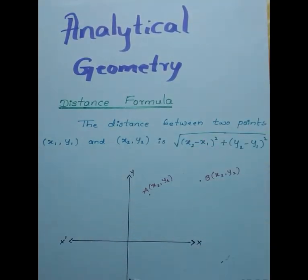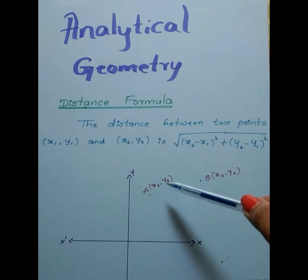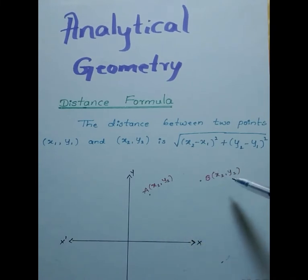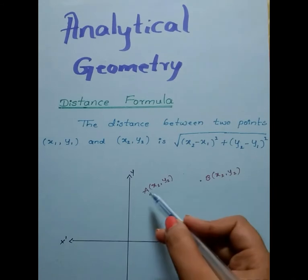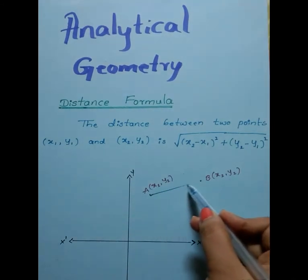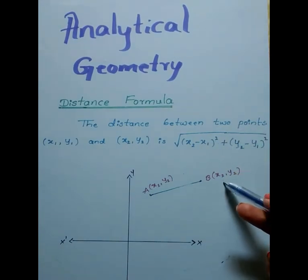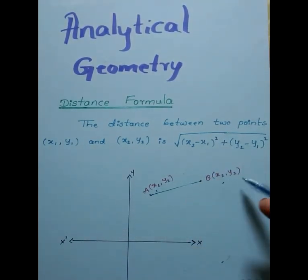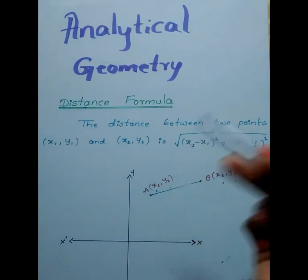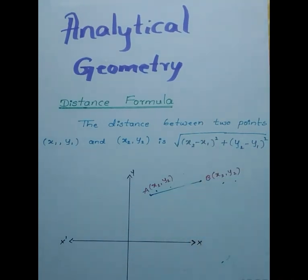In a Cartesian plane, the x and y axes are there. Take two points A(x1, y1) and B(x2, y2). The distance between A and B is the square root of (x2 minus x1) whole square plus (y2 minus y1) whole square.